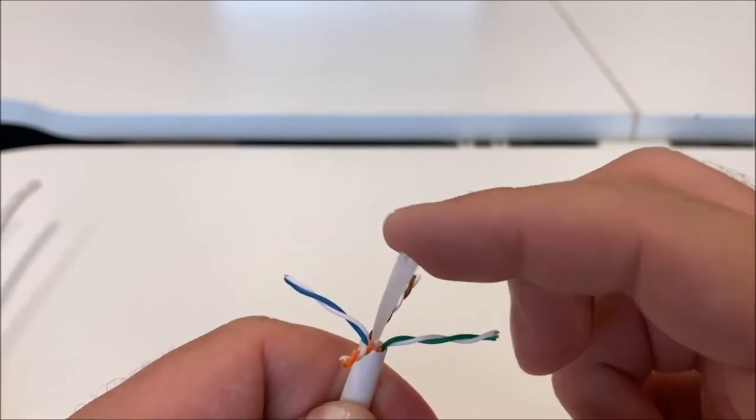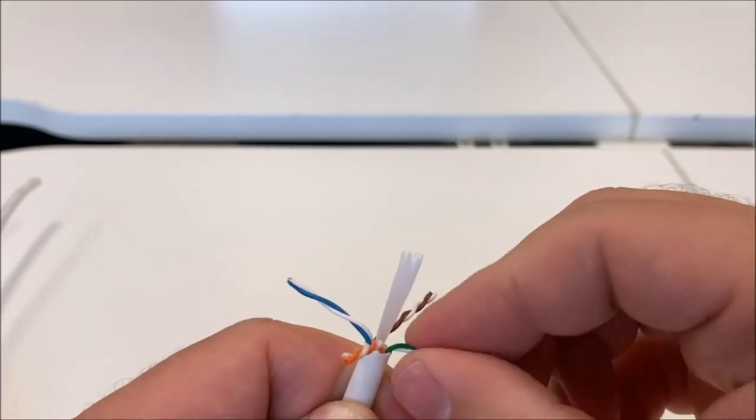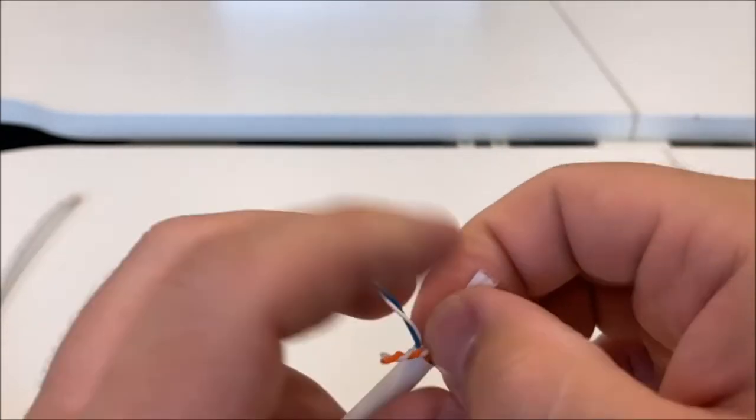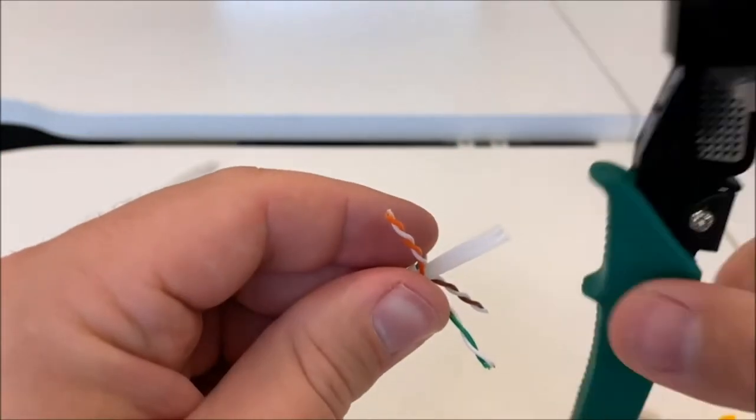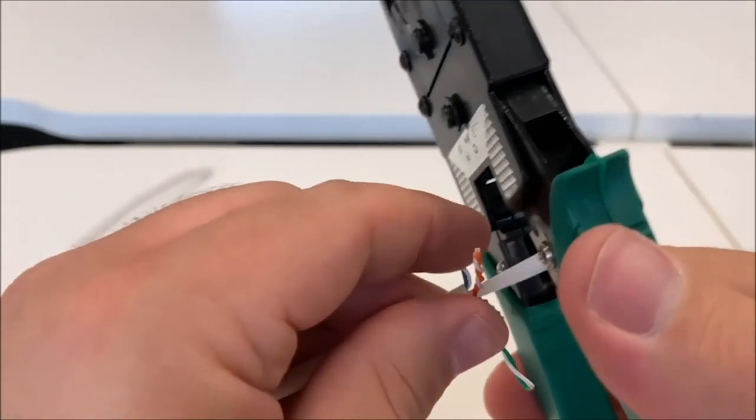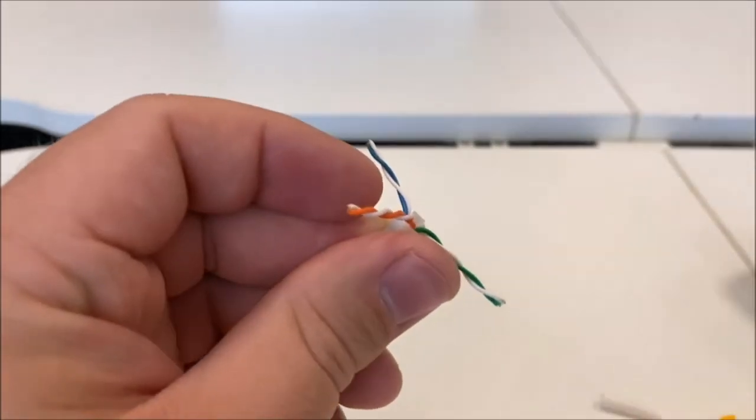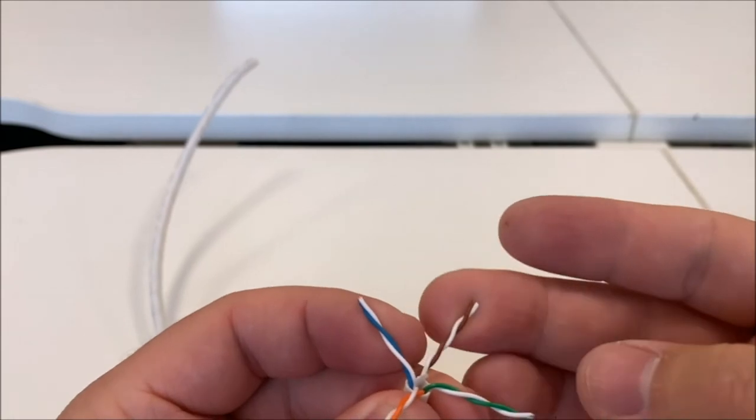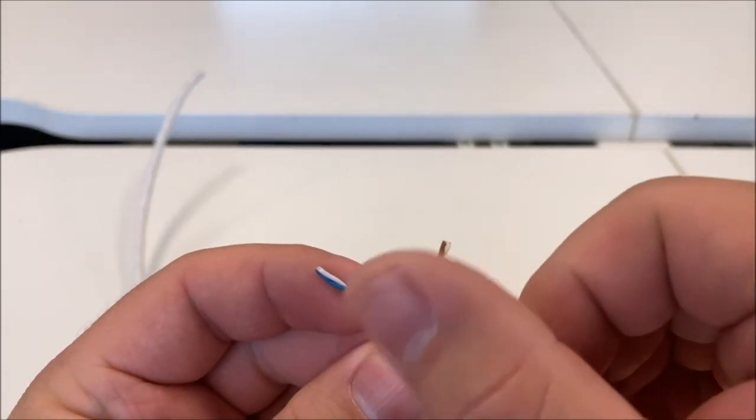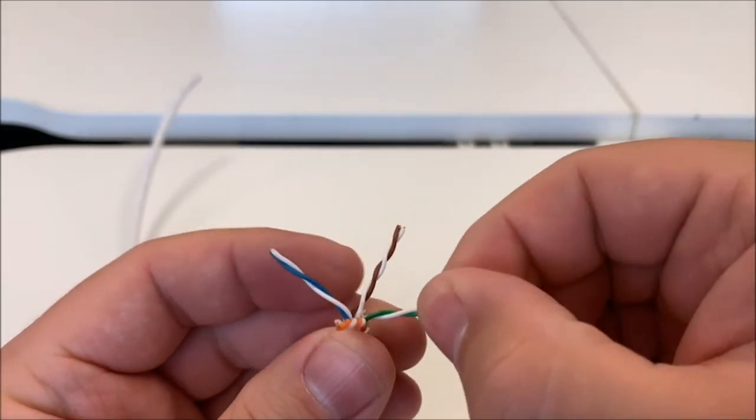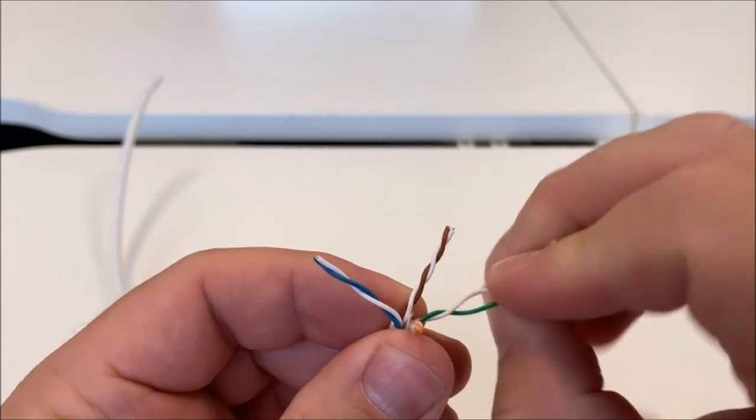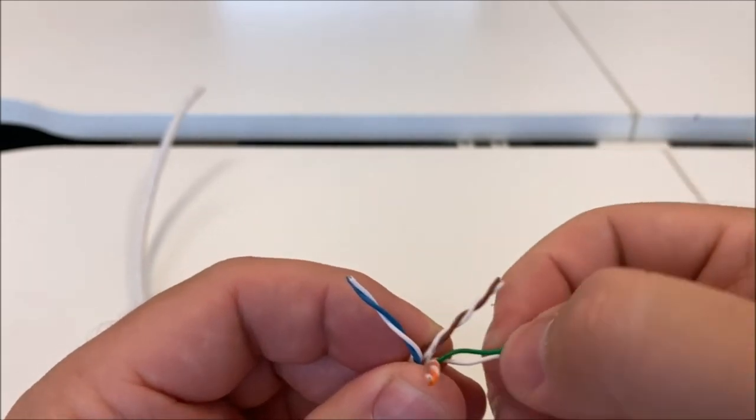Now at the moment, this has got this big, really annoying piece of strengthening built into the middle of this cable, so I'm going to quickly just cut that bit off. There we go, so that's that bit gone. So now I've got my twisted pair cables. Now what I need to do is just slowly and carefully straighten those out.